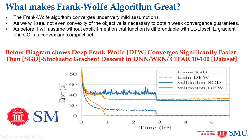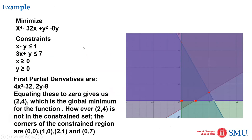Let's see another example of how the Frank-Wolfe algorithm converges. This is a typical polynomial equation with set-up constraints. These constraint points are established in the graph — there are four constraint points. Let's see how Frank-Wolfe is applied to this polynomial with these constraints.